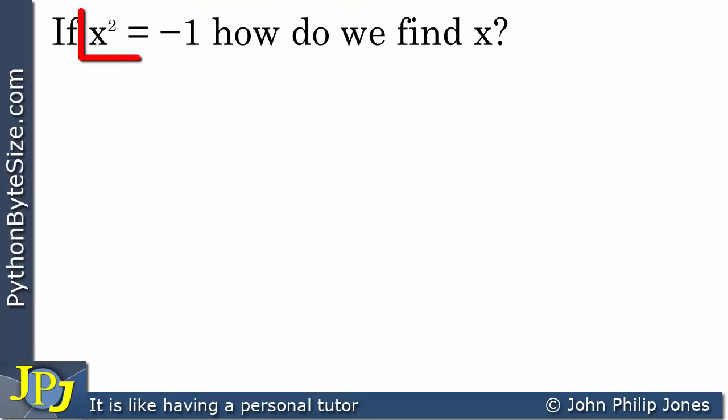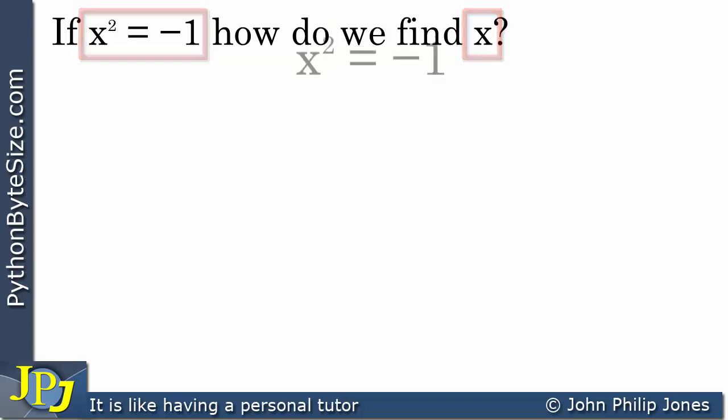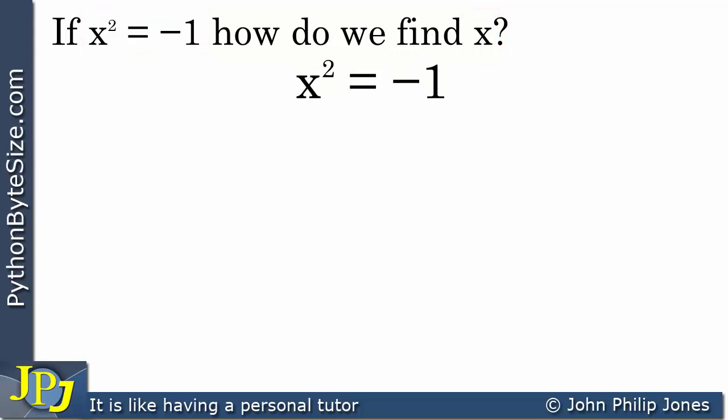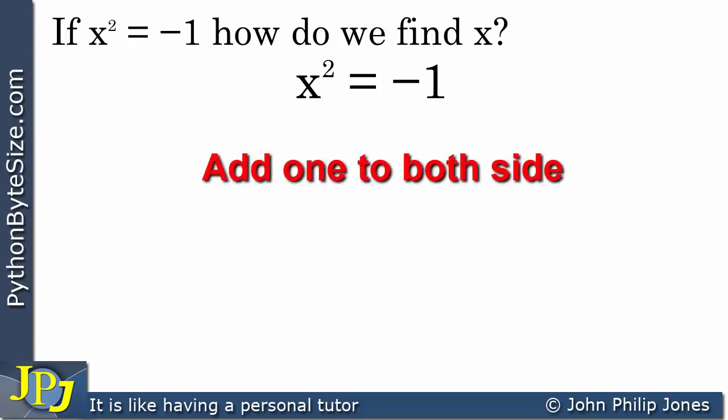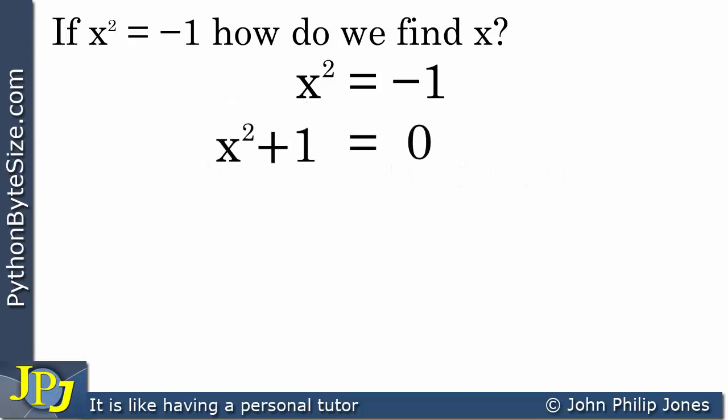x squared equals minus 1 — how do we find x? I'm going to arrange for this equation to equal 0. To achieve that I add 1 to both sides, giving me x squared plus 1 equals 0. Now if I'm going to factorize this, what will give me x squared? What two things do I need to multiply together to give x squared? The answer is obviously x, because x times x is x squared.